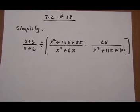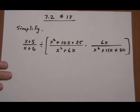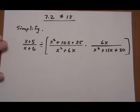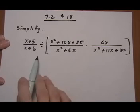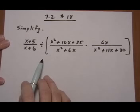7.2 Number 18. Simplify. This one looks pretty bad because there's a lot of stuff happening, but what you want to keep in mind is that you're going to go step by step. Just take it one piece at a time and use the order of operations.